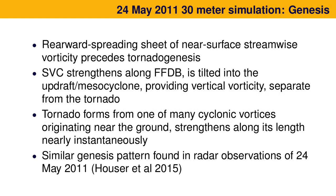Let's look at genesis — the tornado's formation. Being able to identify the processes that go into genesis, and finding things in radar data before the tornado forms, can help us make good forecasts and get people warned. The tornado forms from many cyclonic vortices. One important thing is that the vortex that becomes the tornado forms almost simultaneously along its length — you don't see it descending from the mesocyclone down to the ground like a dynamic pipe. This genesis in our simulation is very similar to what was observed for the actual El Reno event, which is pretty gratifying.